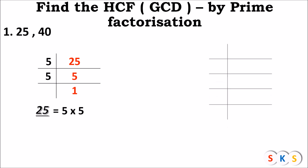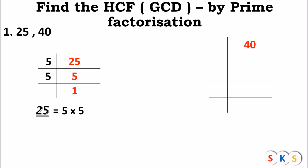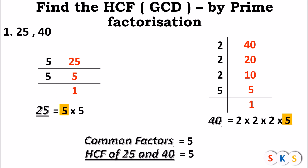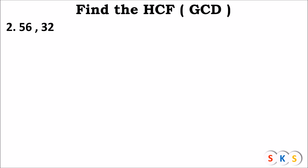Now we find prime factors of 40. 40 is divided by 2, which is prime. 40 ÷ 2 = 20, 20 ÷ 2 = 10, 10 ÷ 2 = 5, 5 ÷ 5 = 1. So the prime factor of 40 is 2 × 2 × 2 × 5. Now we find common factors of both numbers. 5 is common in both. Therefore, SCF of 25 and 40 is 5.